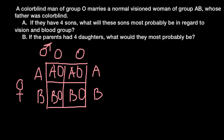This is because allele O is recessive to both allele A and allele B. Now let's consider the probability for the progeny to have the genetic disorder of colorblindness. It is an X-linked trait. We know that the man is colorblind, which means he has one defective allele on the X chromosome.